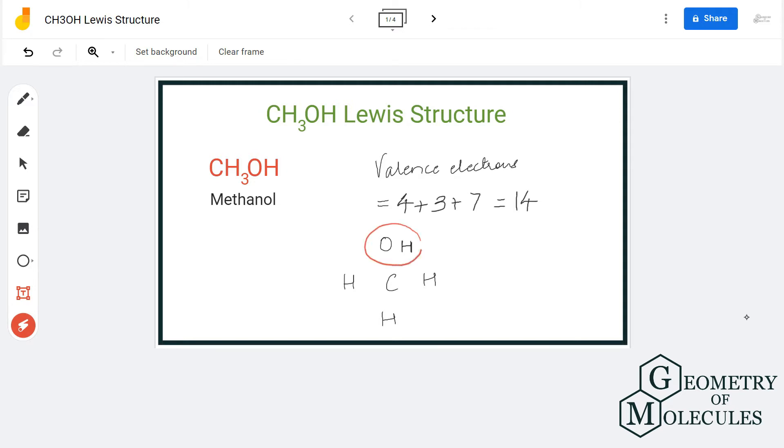The OH group will go on the outside because it's a functional group for alcohol. All the hydrogen atoms will be on the outside as well, because hydrogen cannot take the central position in the Lewis structure. We'll place carbon in the center, all three hydrogen atoms around carbon, and then the OH group.